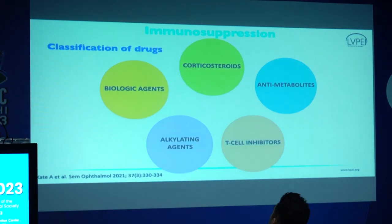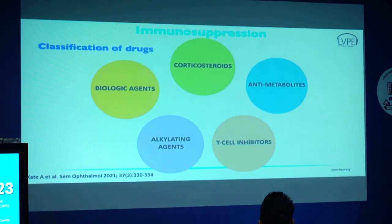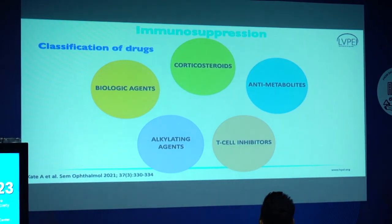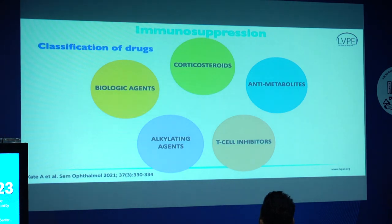When we look at immunosuppression, we think of the corticosteroids, which are some of the most common drugs that we use. The others would be antimetabolites, the T-cell inhibitors, alkylating agents, and biological agents. As ophthalmologists, we're usually not very well versed with all of these drugs, so there's a little apprehension with wanting to start them quickly when you come across certain conditions where these are needed.